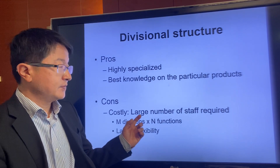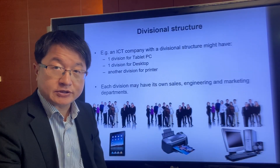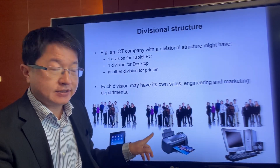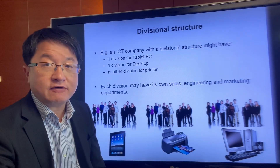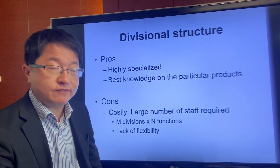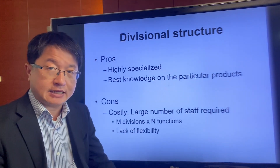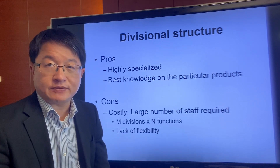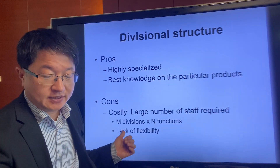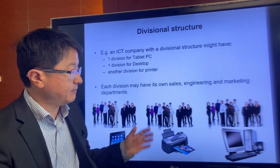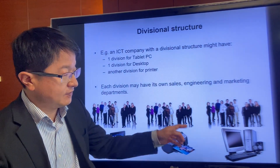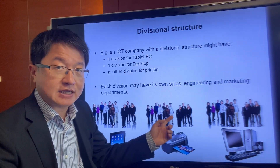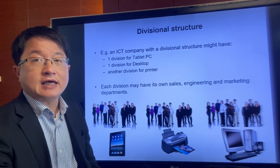However, the divisional structure requires a lot of staff. If a company has N product lines and each needs M staff, the total headcount is M multiplied by N — quite a large number. If the number of product lines is too many, the company must be very large. There is also a lack of flexibility: if a product line is discontinued, staff who are too specialized in that product will find it very difficult to move to another team.